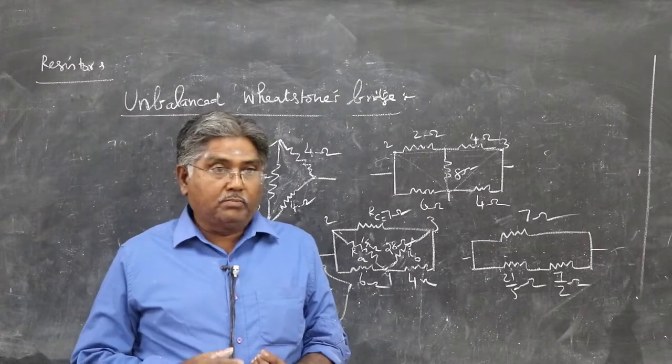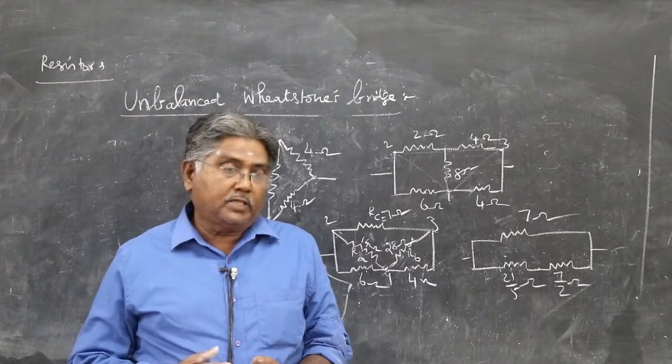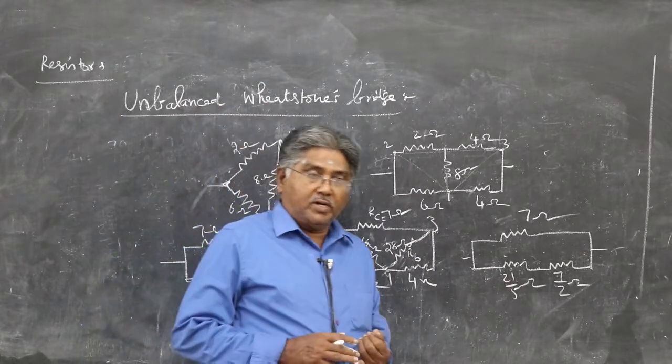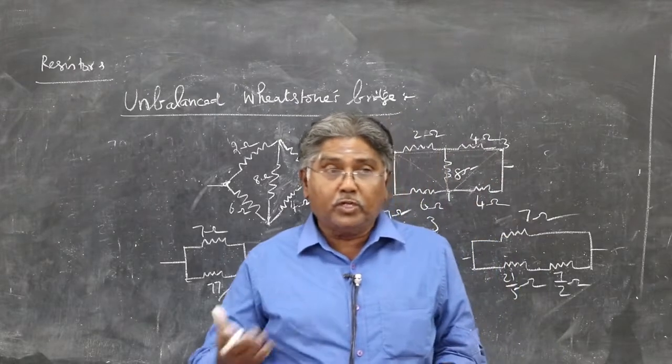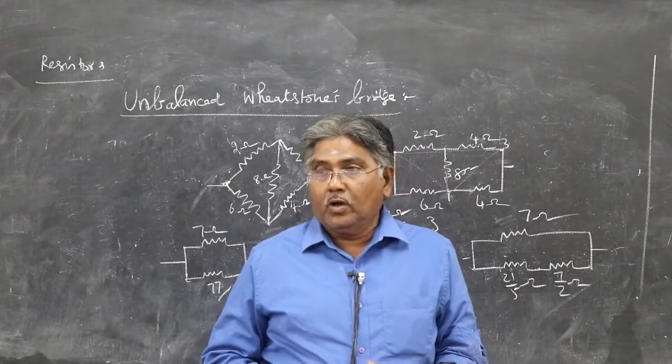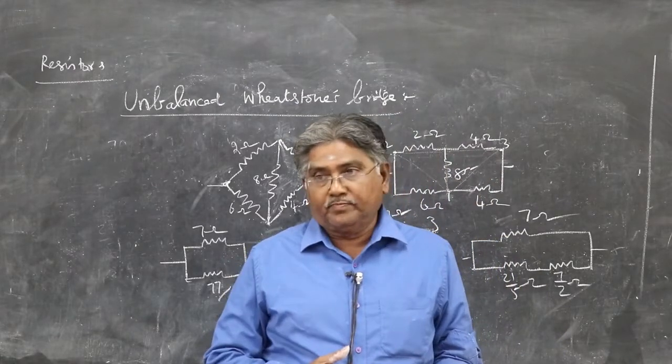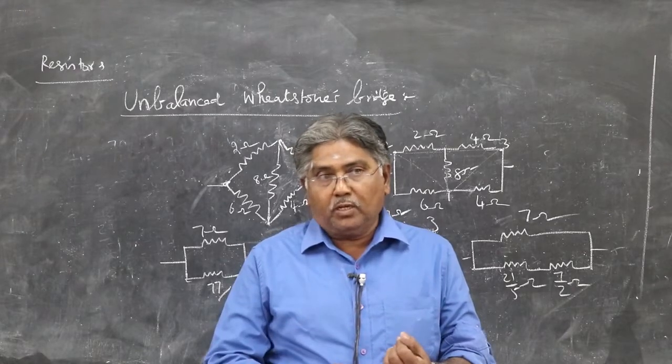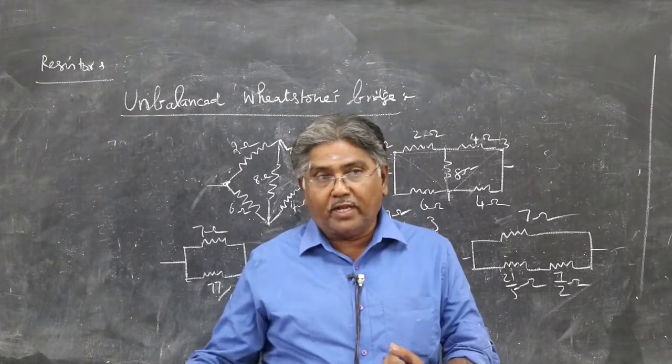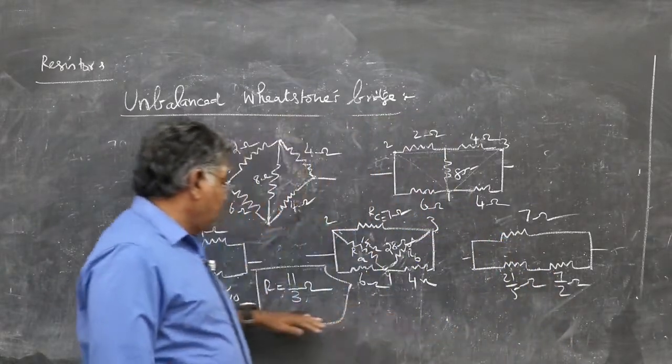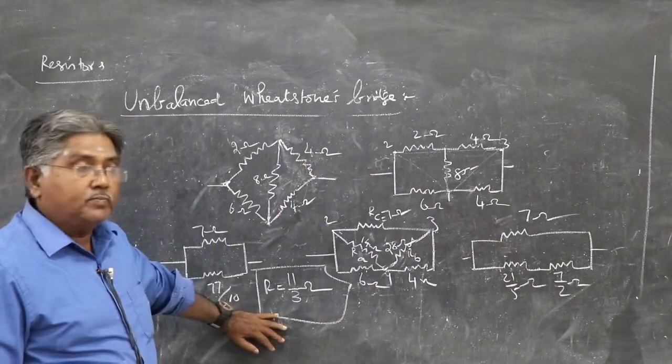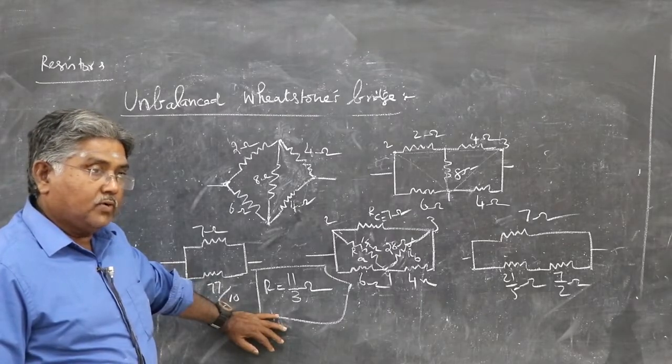First one, potential method. Use it in the exams, 12 standard exams. The other two, for learning purpose, may be useful in your higher classes. Or you can use these methods to cross-check. So we applied potential method, we converted delta to star and verified. Also, we converted star to delta and verified. In all three cases, you got the same effective resistance: 11 by 3 ohm. See you.